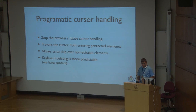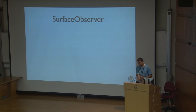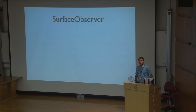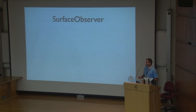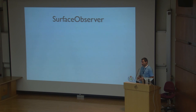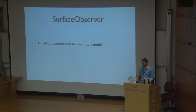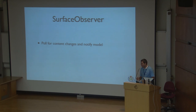Now I'll talk about a different mechanism we have in the editor, which is the surface observer. This is a very important part when it comes to synchronizing the data model and our views, so the content editable. When I was talking about the good part of content editable — text insertion — we want to carry over that text insertion from the view back to the model. That's what the surface observer does. It looks for changes in the view, and when there's a change, it fires an event that the model is listening to, and notifies the model about that change. The model then knows exactly what got added or removed in what part of the document, and this way we always stay in sync.